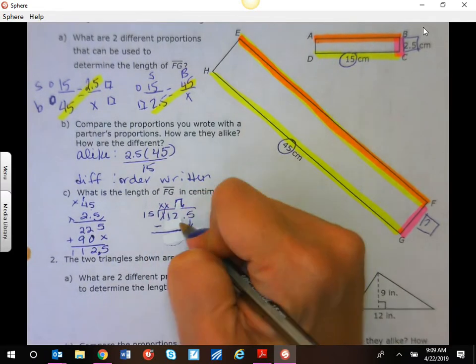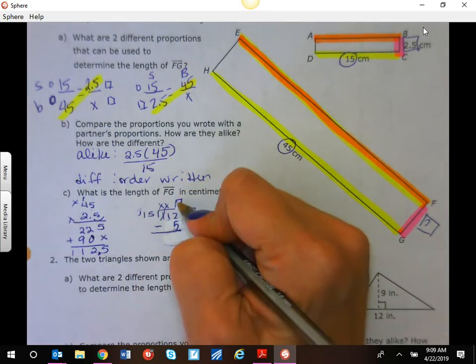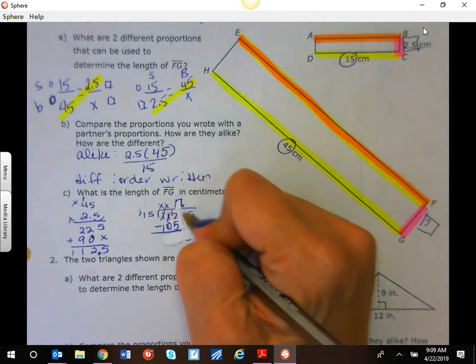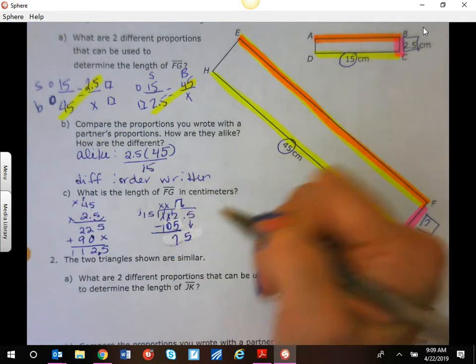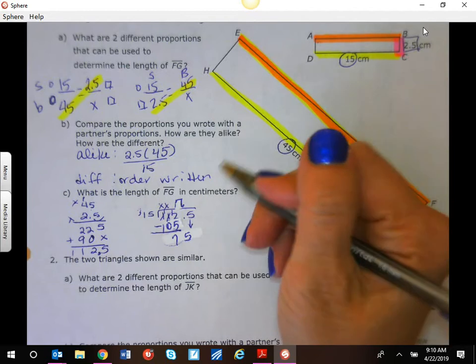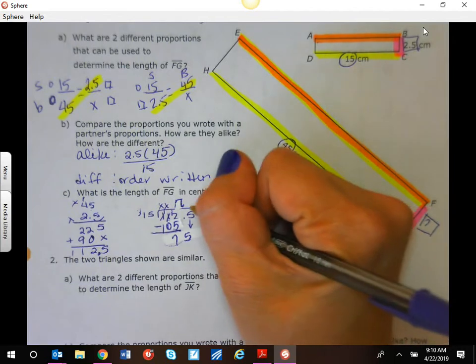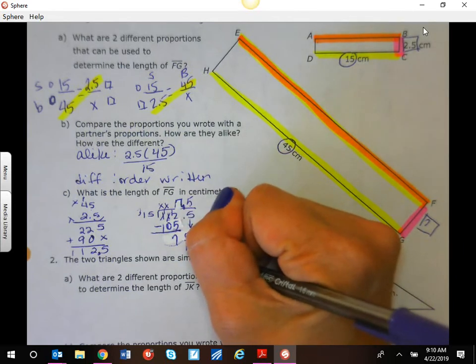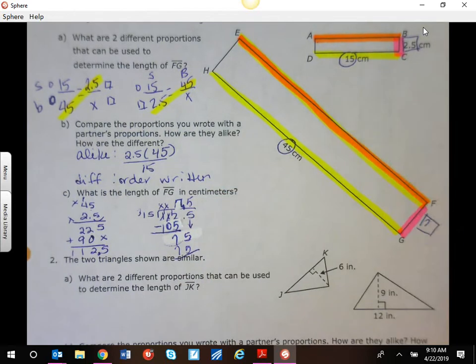7 times 5 is 35, 7 plus 3. There you go. That's much better. So we're still going to borrow. Now we have 75. That works out much better. So FG is 7.5 centimeters.